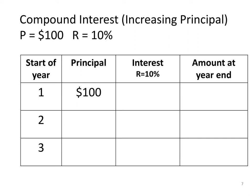We can summarize the idea of compound interest using this table. The principal in compound interest will increase every year. Suppose we have P equals $100 and interest rate r equals 10%. In the beginning of the first year, the principal is $100, the interest will be 100 multiplied by 10%, which equals $10, and the amount at the end of the year will be P plus I, therefore $110.